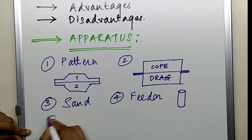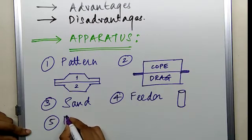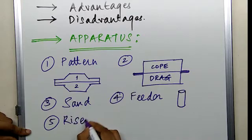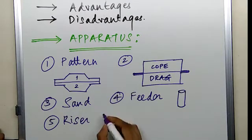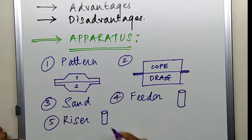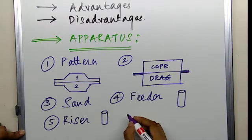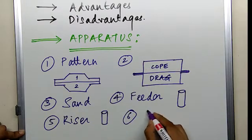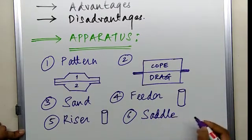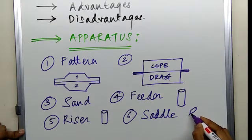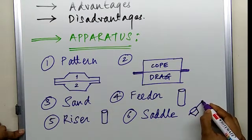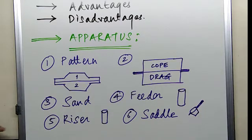And fifth is the riser. The riser looks exactly like feeder which is a hollow cylindrical container, small container through which the hot fumes of molten metal are coming out. And lastly we have saddle. Saddle is a container which helps the molten metal.